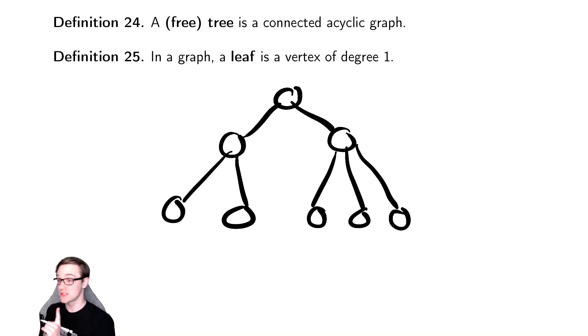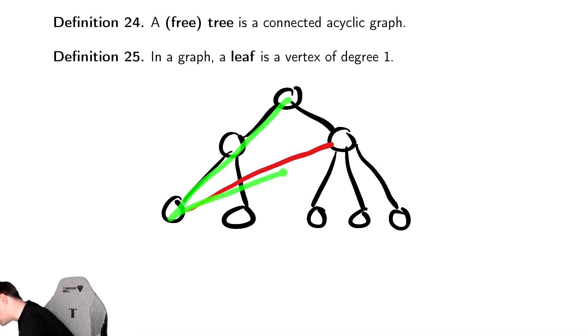Notice it has no cycles. If I were to add in an edge that connected those two vertices, I would now have a cycle here, and it is no longer a tree.